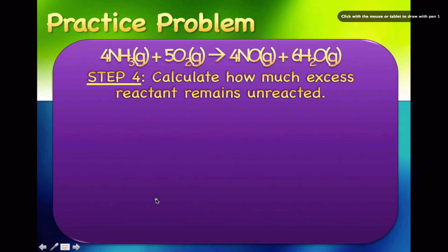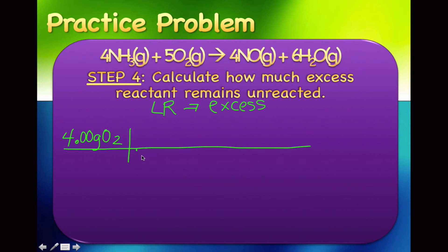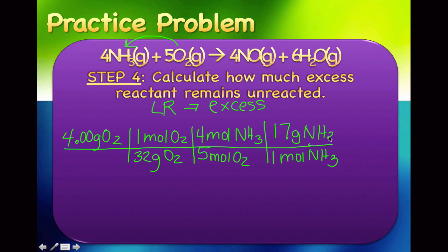Finally, the question asked how much excess reactant remains. You always start with the limiting reactant and do stoichiometry to the excess reactant. Start with 4 grams of O2 (the limiting reactant): divide by 32 g/mol (molar mass of O2), apply the mole ratio (5 O2 : 4 NH3 from the balanced equation), then multiply by 17 g/mol (molar mass of NH3). The result is 1.70 grams of ammonia was used.